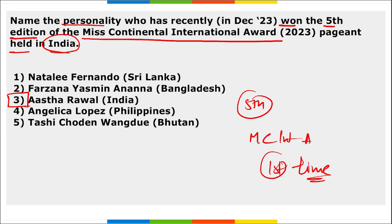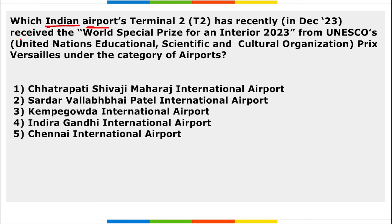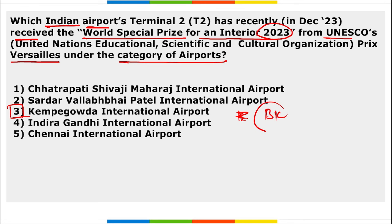Which Indian airport's Terminal 2 has recently received the World Special Prize for an Interior 2023 from UNESCO's Prix Versailles under the category of airport? It is Kempegowda International Airport in Bengaluru, Karnataka. This airport received the award for best interiors from UNESCO Prix Versailles under the category of airport.